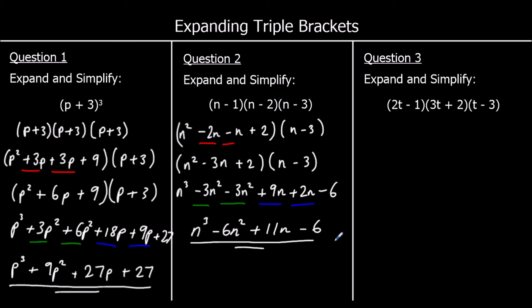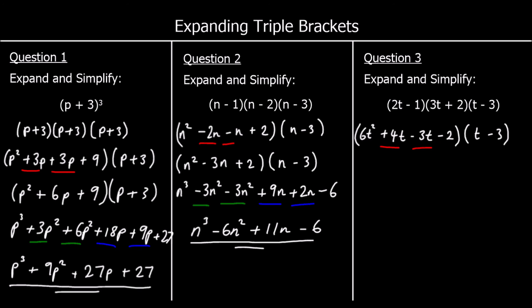And finally, question 3. Expand and simplify the first two brackets. 2t times 3t is 6t squared. 2t times 2 is 4t. Negative 1 times 3t is negative 3t. And negative 1 times 2 is negative 2. And I've got the last bracket on the end. Simplifying: 4t take away 3t is t. So I've got 6t squared plus t minus 2 in my first bracket, and (t - 3) in the second bracket.